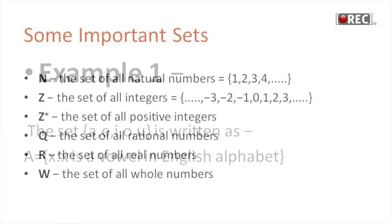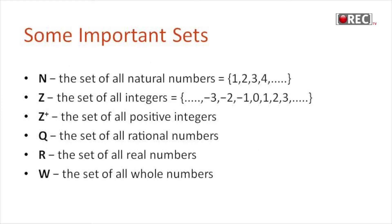Some important sets: N is the set of all natural numbers, Z is the set of all integers, Z plus is the set of all positive integers, Q is the set of all rational numbers, R is the set of all real numbers, and W is the set of all whole numbers.